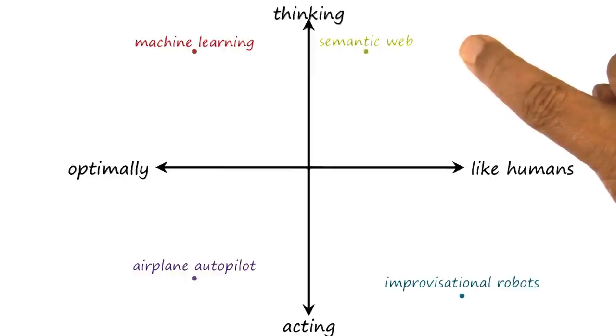Semantic web, a new generation of web technologies in which the web understands the various pages and information on it. I might put that under thinking like humans. They're thinking, not acting in the world. And it's much more like humans than, let's say, some of the other computational techniques here.